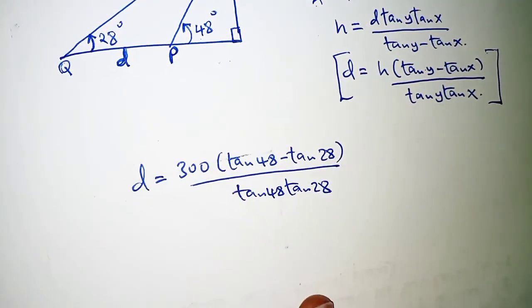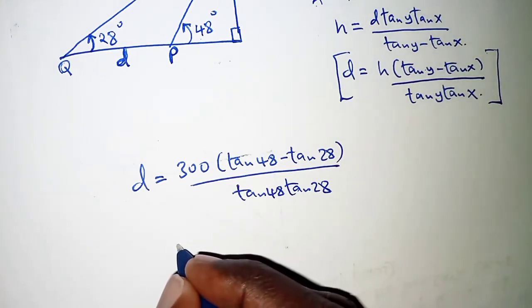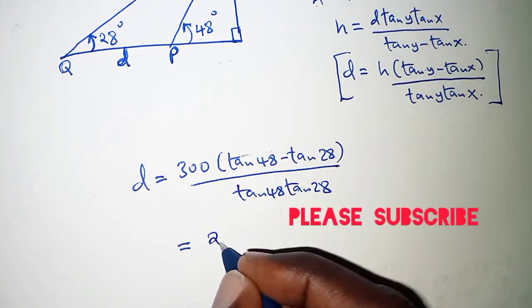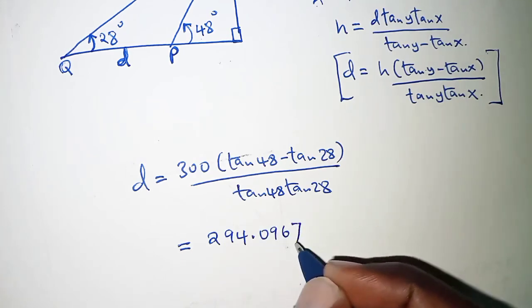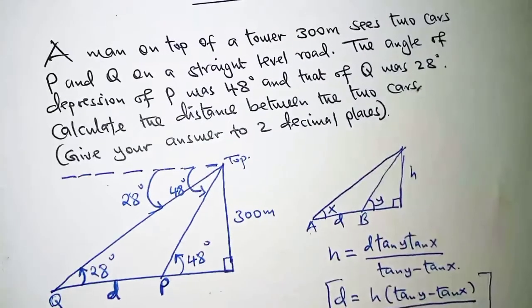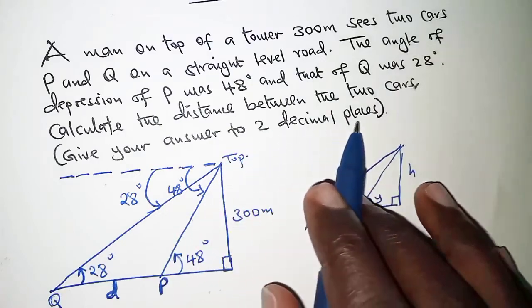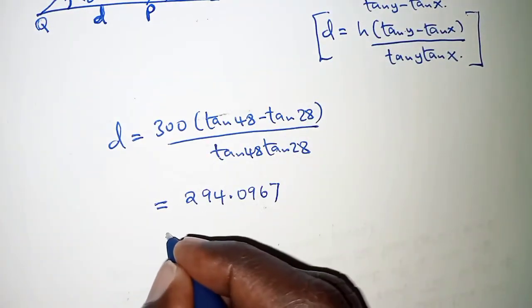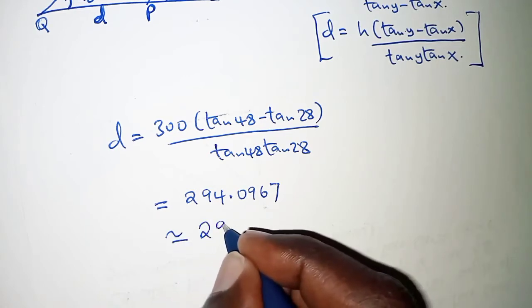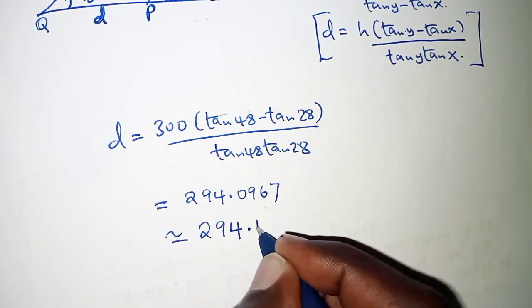And directly from my calculator, I am getting 294.0967. But because we are told to give our answer to two decimal places, we round these off. And that is approximately 294.10.